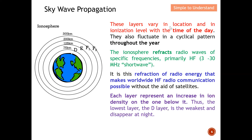These layers vary in location and ionization level with the time of day, and also fluctuate in cyclical patterns throughout the years. The ionosphere reflects radio waves of specific frequencies — typically HF high frequency from 3 to 30 MHz. It is this reflection of radio energy that makes worldwide HF radio communication possible without the aid of satellites.